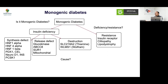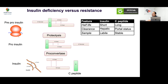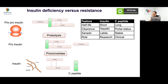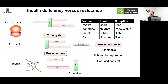To differentiate deficiency from resistance, you can measure either insulin or C-peptide. C-peptide is preferred as it is a more robust assay — equimolar with longer half-life. In MODY, fasting C-peptide levels are around 1.5 to 1.6 ng/mL, whereas in type 1 diabetes they are around 0.6 ng/mL — low but not absolutely low. In monogenic insulin resistance, clues include acanthosis, high insulin requirements, and very high insulin levels — often in the hundreds.